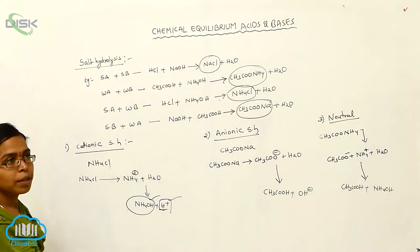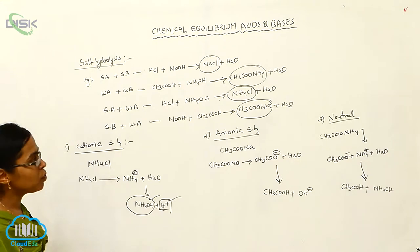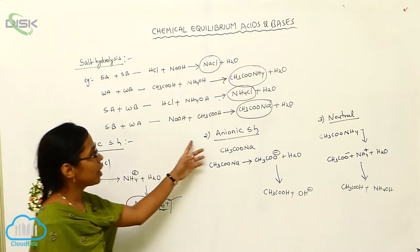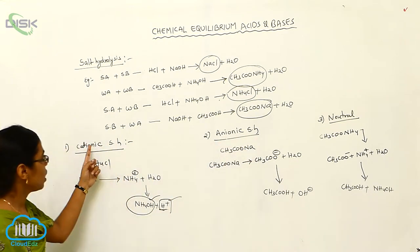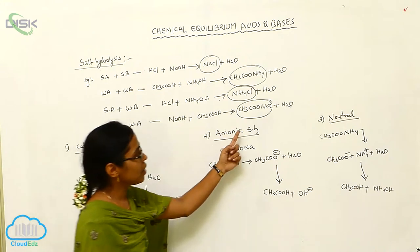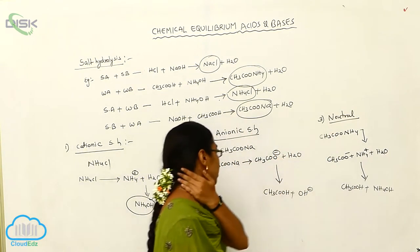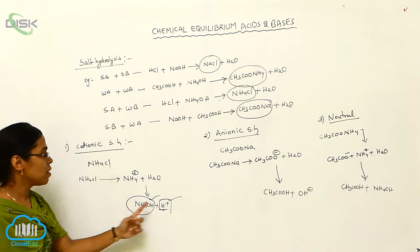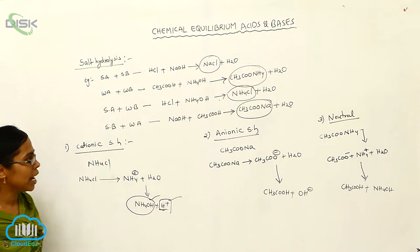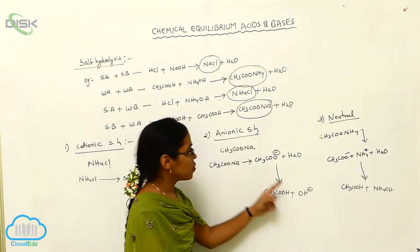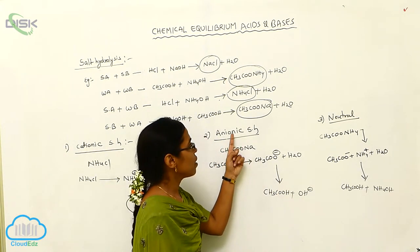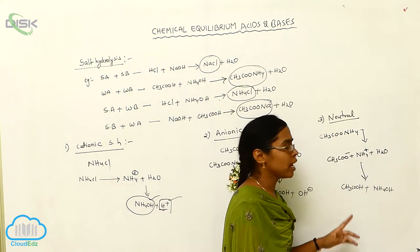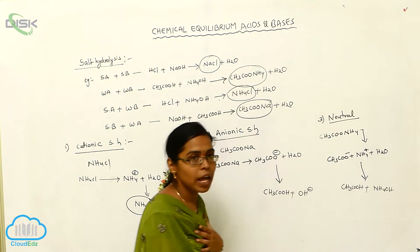Salt hydrolysis is the reaction of a salt with water. There are three types of salt hydrolysis: number one, cationic salt hydrolysis; number two, anionic salt hydrolysis; number three, neutral hydrolysis. Cationic hydrolysis gives cations on hydrolysis. Anionic salt hydrolysis gives anions on hydrolysis. Neutral hydrolysis is when the salt gives neither cations nor anions.